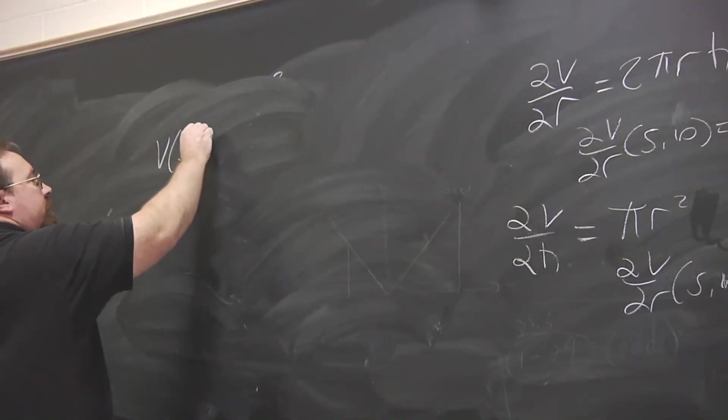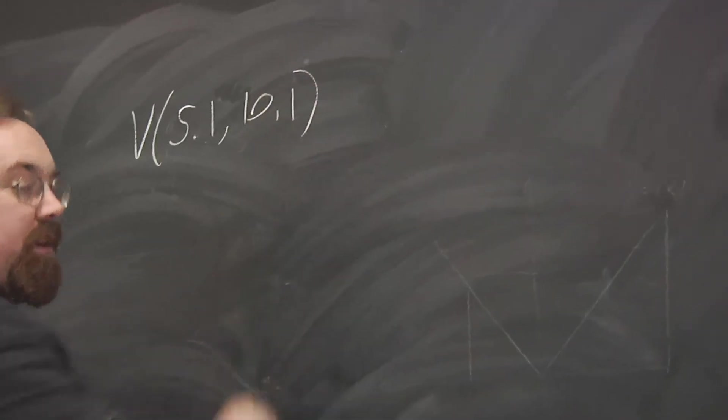And to illustrate this, let's compute the actual volume in a case where we are off by that much. So V of 5.1, 10.1. Compute that volume.